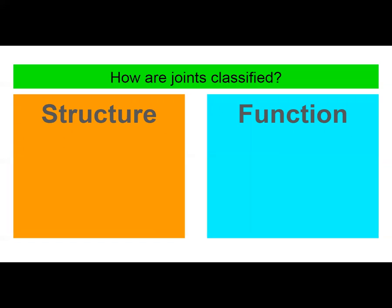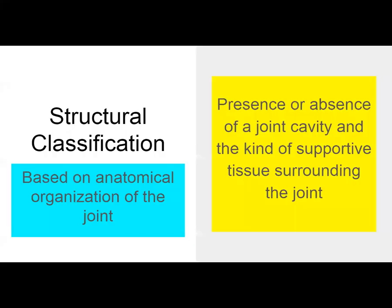How are joints classified? Two main ways. You can classify joints by structure or function. For structural classification, it's based on the basic anatomical organization of that joint. An important principle is whether or not you have a joint cavity, as well as the kind of supporting tissue around that joint.